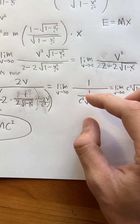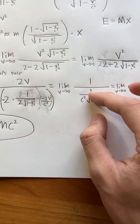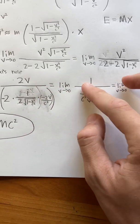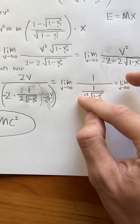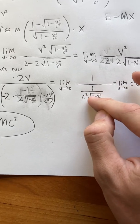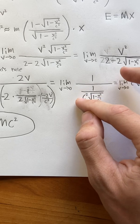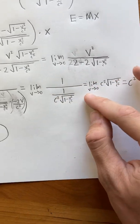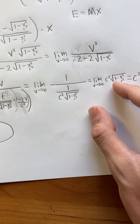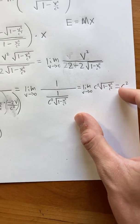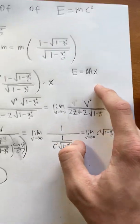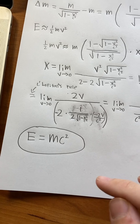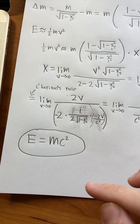And what we're left with is 1 over c squared times the square root of 1 minus v squared over c squared. 1 over 1 over something is just that something. So we get this. And as v approaches 0, this part approaches 1. So this is just c squared. So therefore, our x term is c squared, and we have E equals mc squared, which is Einstein's famous equation. Thanks for watching. Bye.